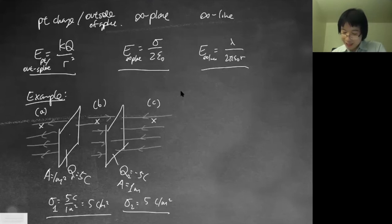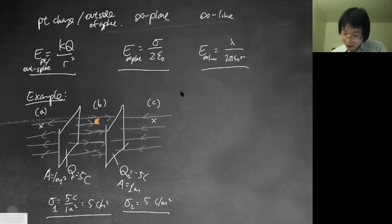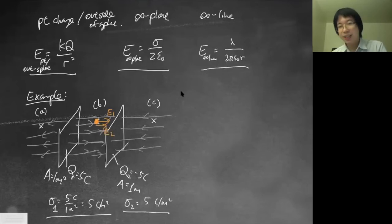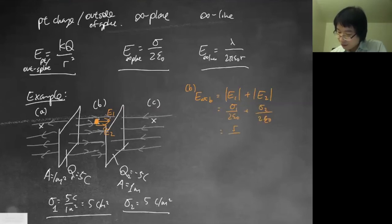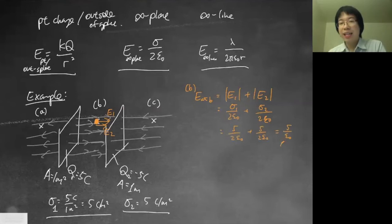At point B, between the plates: the field due to plate one points right and the field due to plate two also points right, so they add. E_B = σ₁/(2ε₀) + σ₂/(2ε₀) = 5/(2ε₀) + 5/(2ε₀) = 5/ε₀. Plug in ε₀ = 8.85×10⁻¹² to get the result in Newtons per Coulomb, since electric field is force per unit charge.